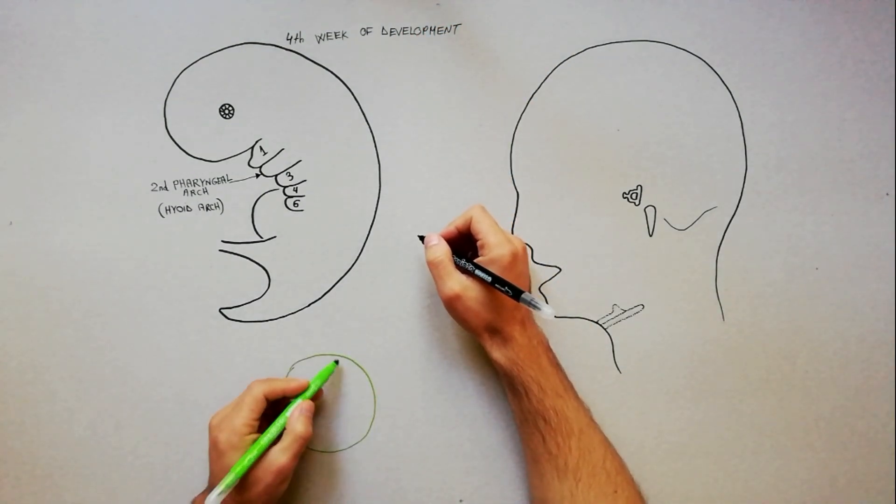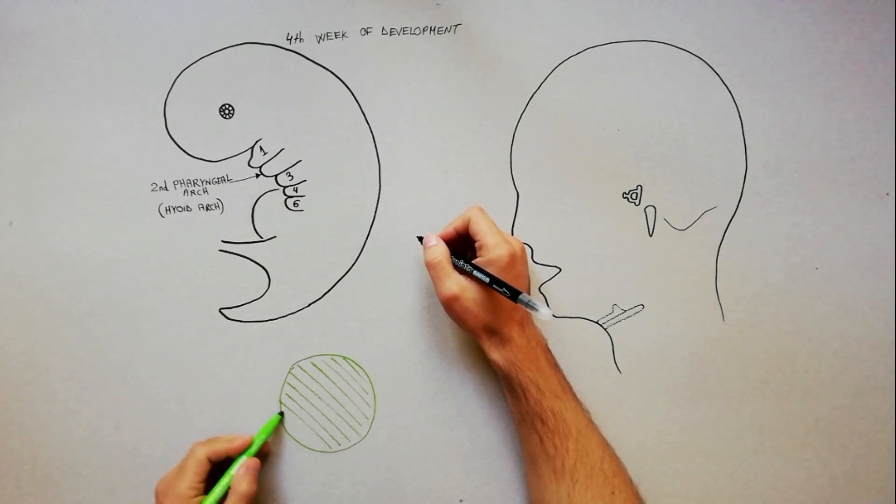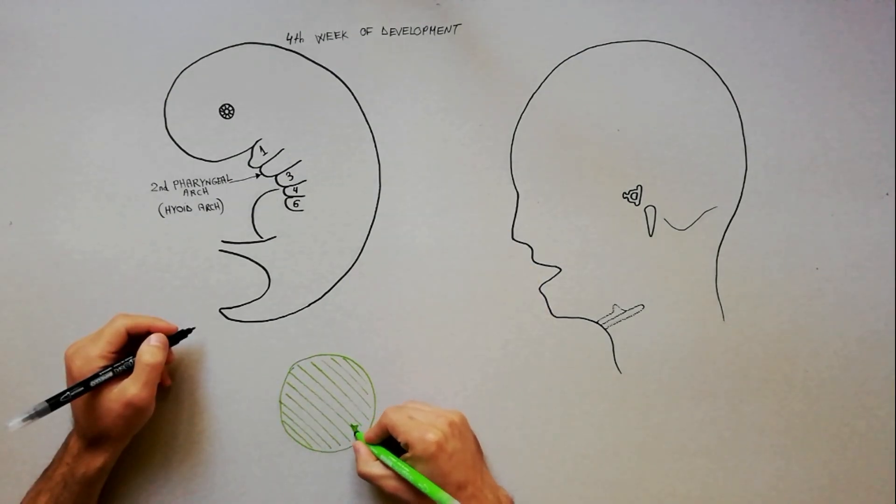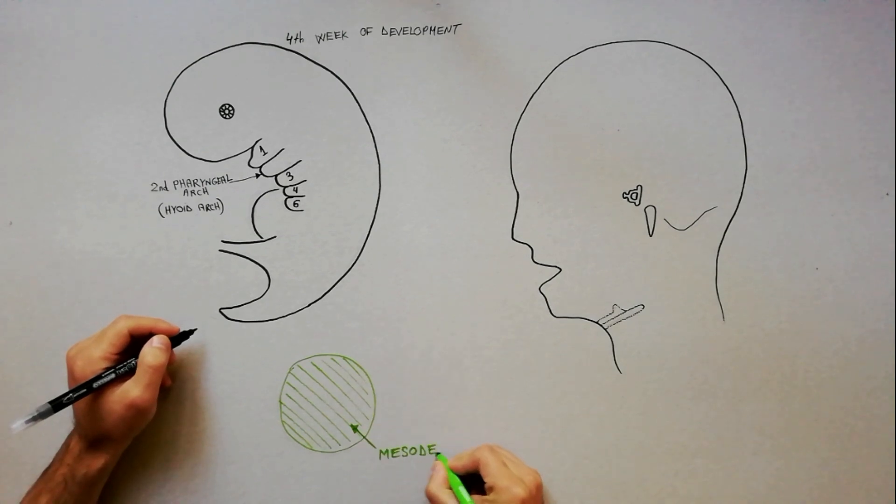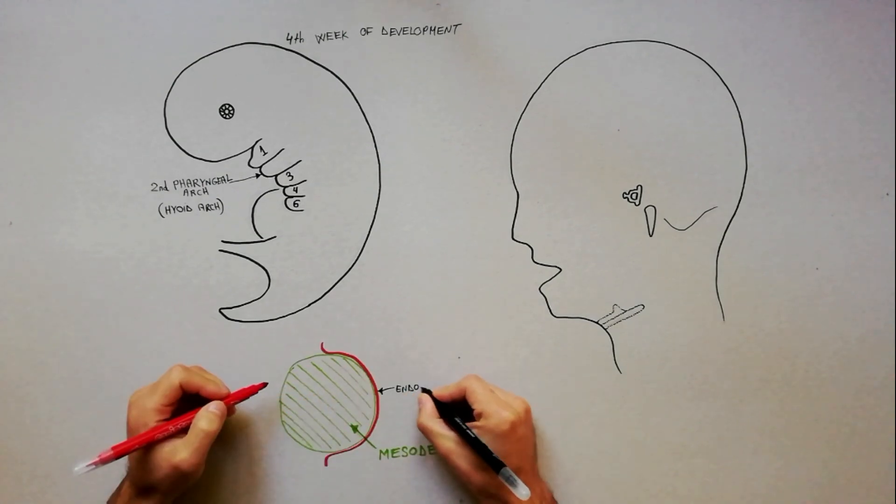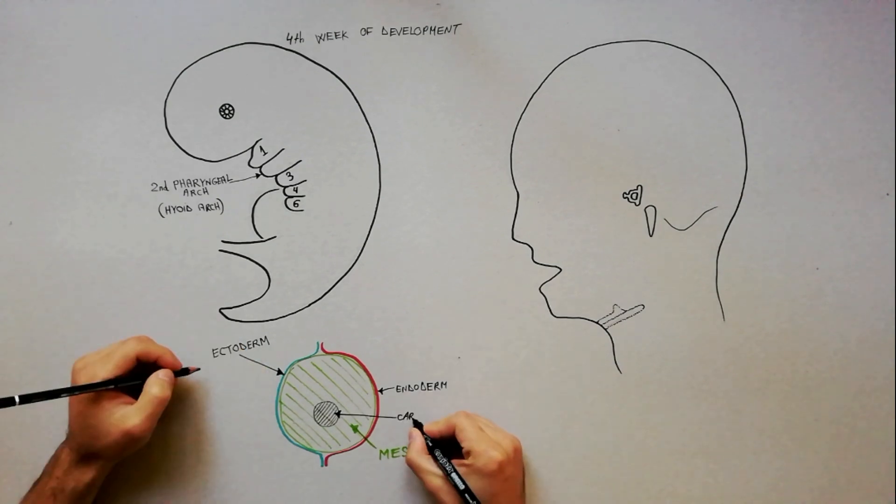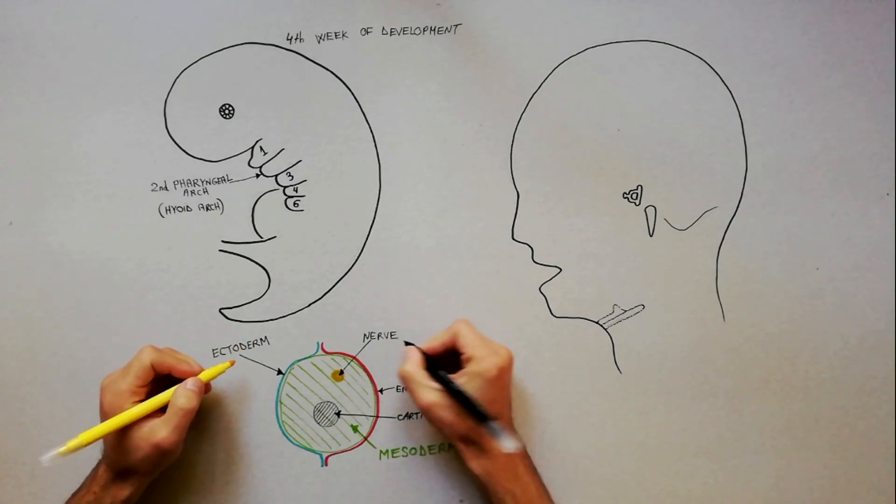On a cross-section, the second pharyngeal arch presents the typical features of a pharyngeal arch: a core of mesoderm covered internally by endoderm and externally by ectoderm, a cartilage, a nerve, and an aortic arch.